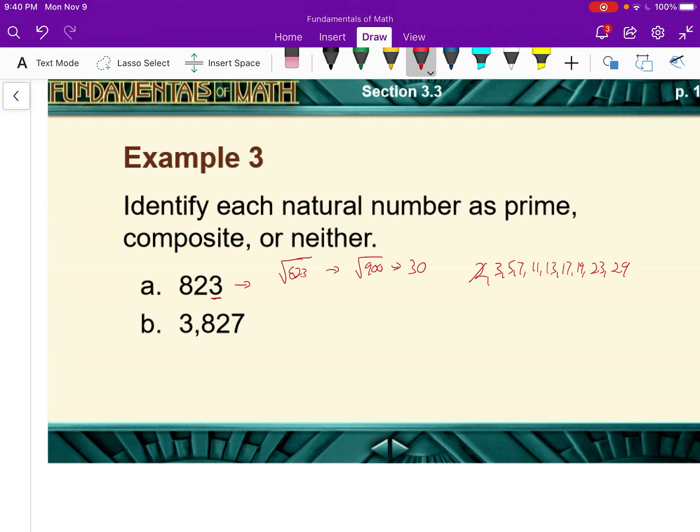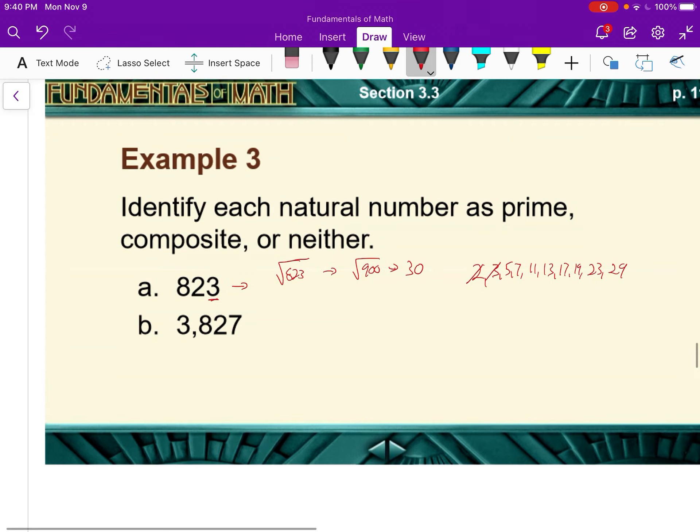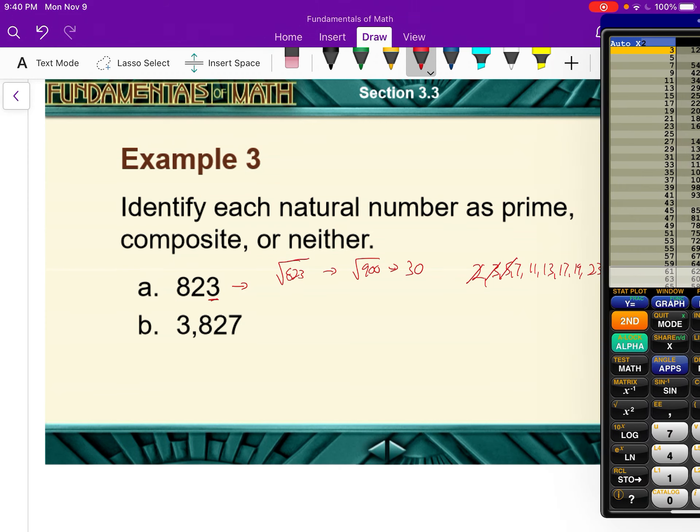We know 2 doesn't work because it's not even. 8 plus 2 plus 3 is 13. That's not divisible by 3. That doesn't work. 5 doesn't work because it doesn't end in 5 or 0. Let's check 7.